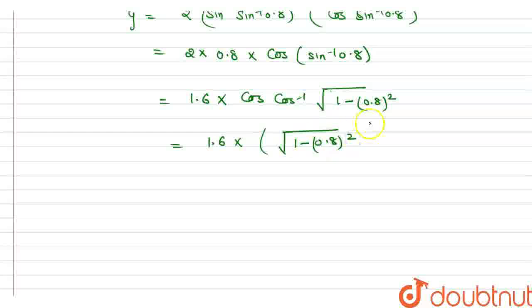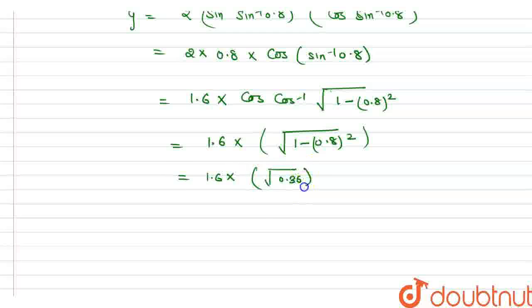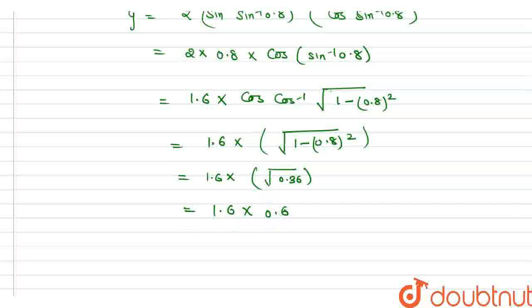Now we can simplify: 1 − 0.64 = 0.36, so we have 1.6 × √0.36 = 1.6 × 0.6 = 0.96. So 0.96 is our final answer.